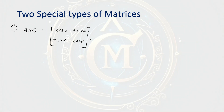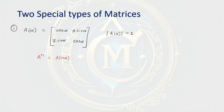What is the speciality of this matrix? If you observe carefully, you will see that the determinant of all these matrices is 1. And similarly, if you multiply this matrix with itself again and again, you will notice that A to the power n will simply be A of n alpha.